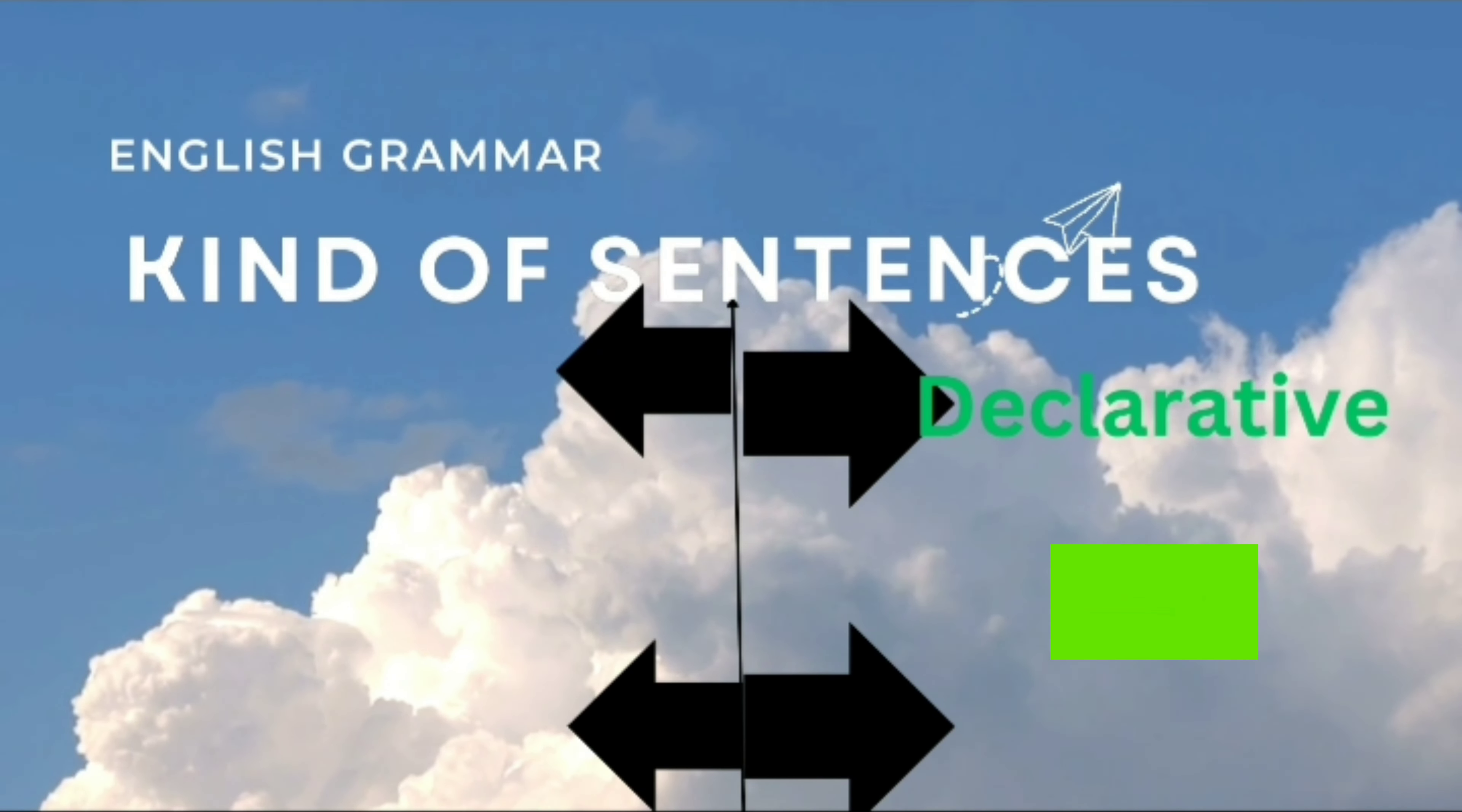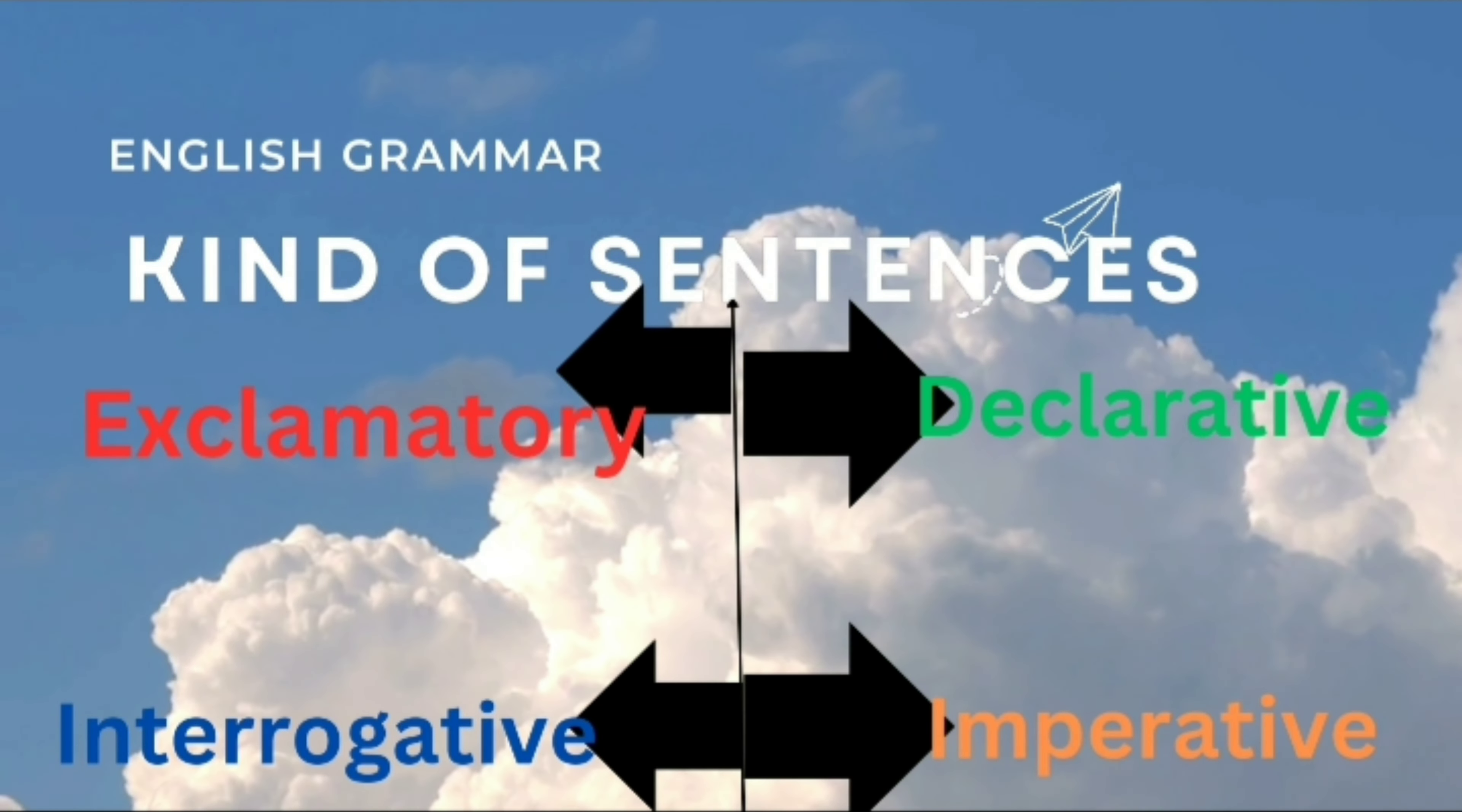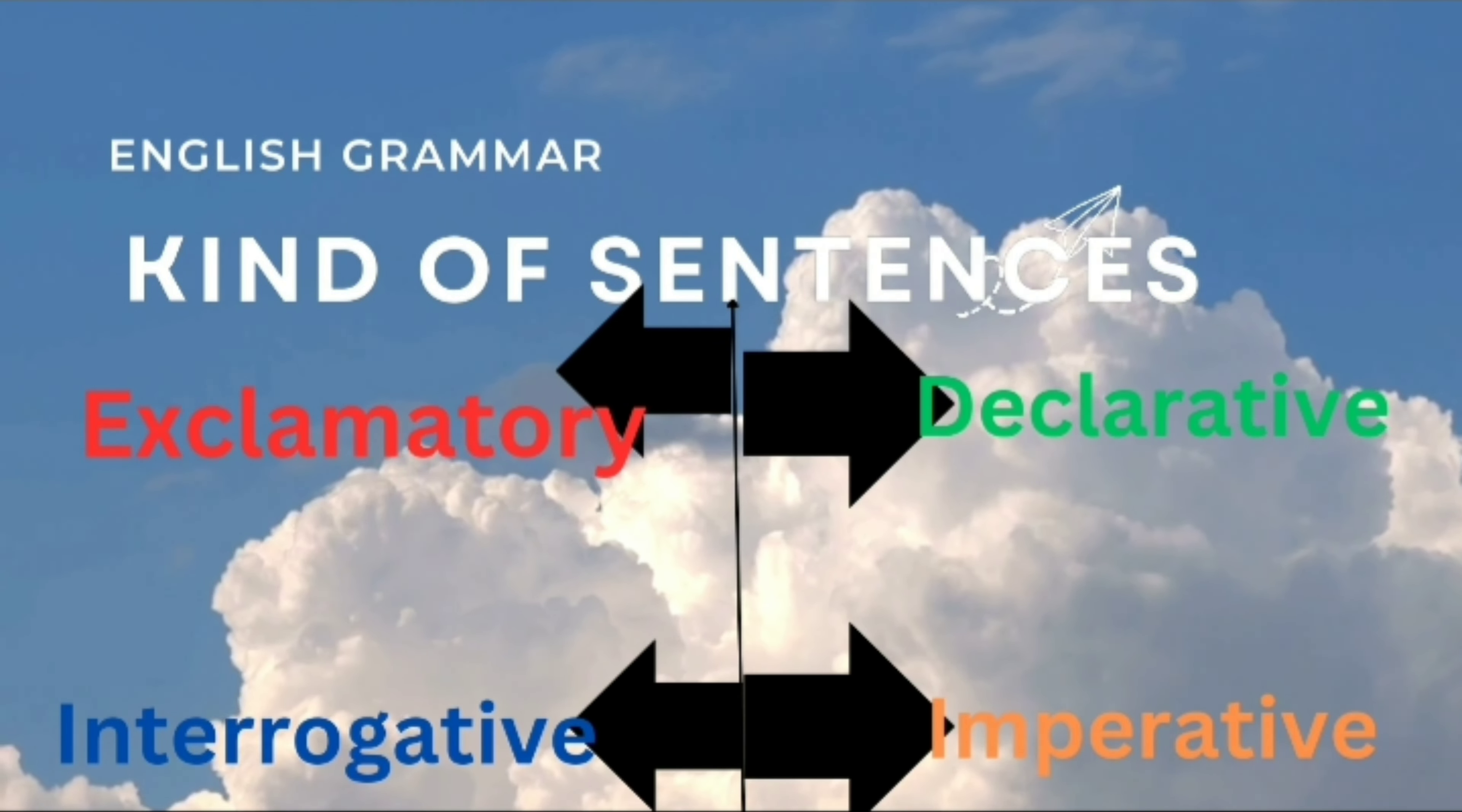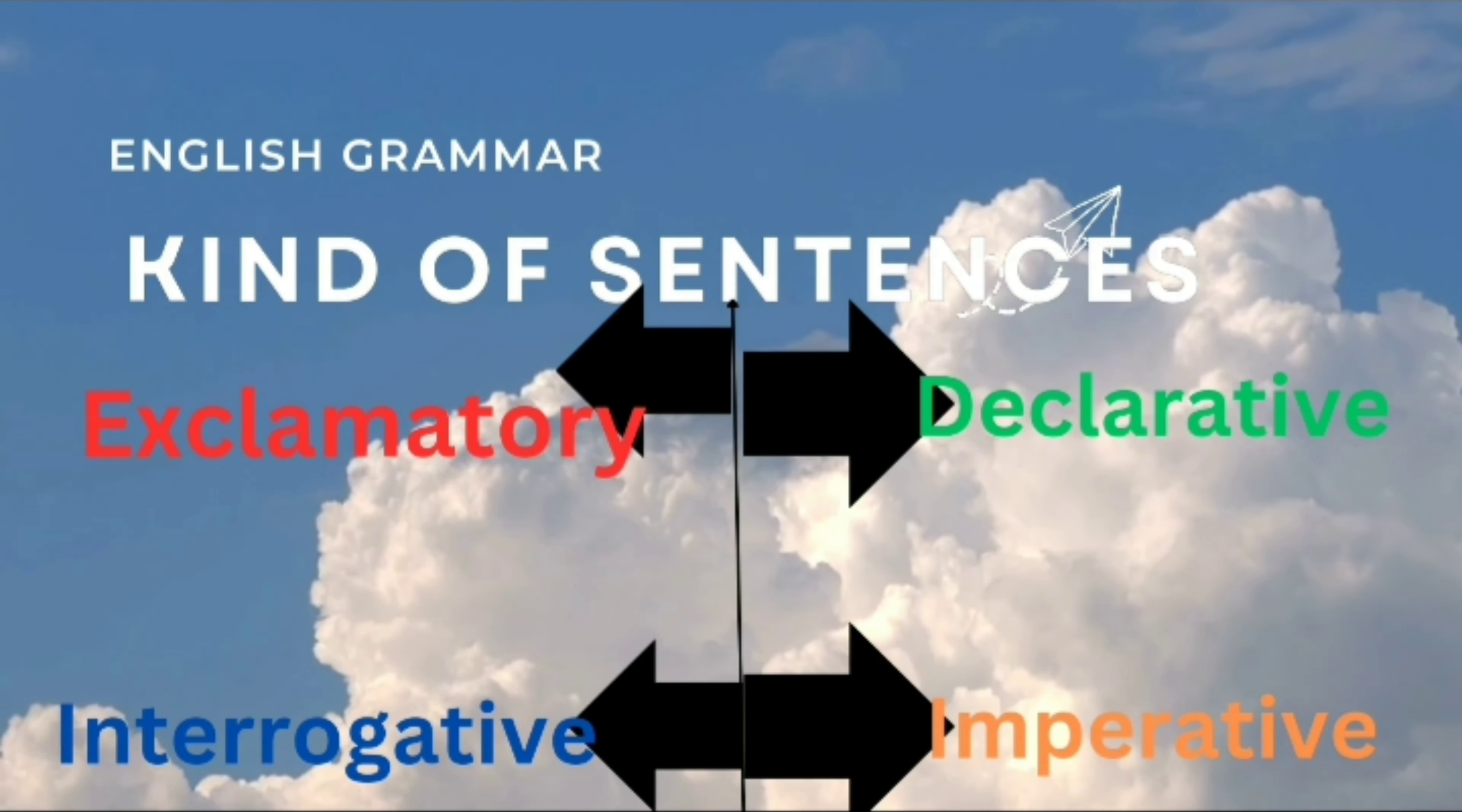Today we are going to learn kinds of sentences. There are four kinds of sentences: declarative, imperative, exclamatory and interrogative. Let's learn these sentences through a story, story time.